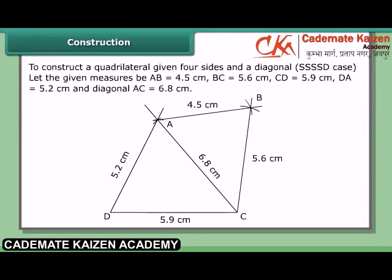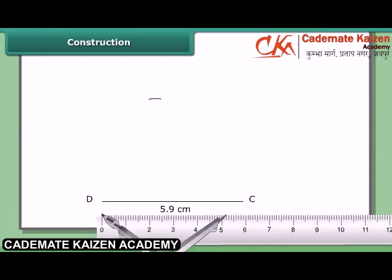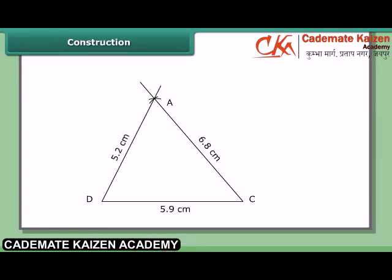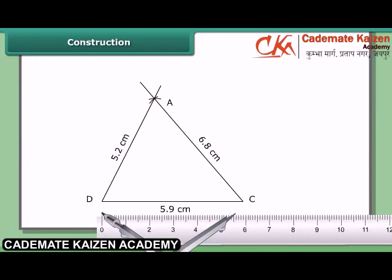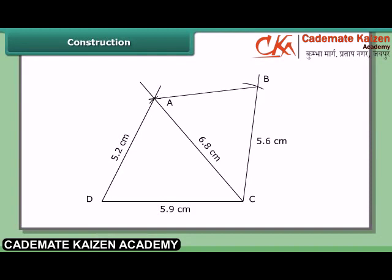The two triangles we can construct to complete the quadrilateral are triangle ADC and triangle ABC. Constructing triangle ADC: with C as center and radius 5.6 cm, draw an arc on the other side of AC. With A as center and radius 4.5 cm, draw another arc to cut the previous arc at B. Join CB and AB. Then ABCD is the required quadrilateral.